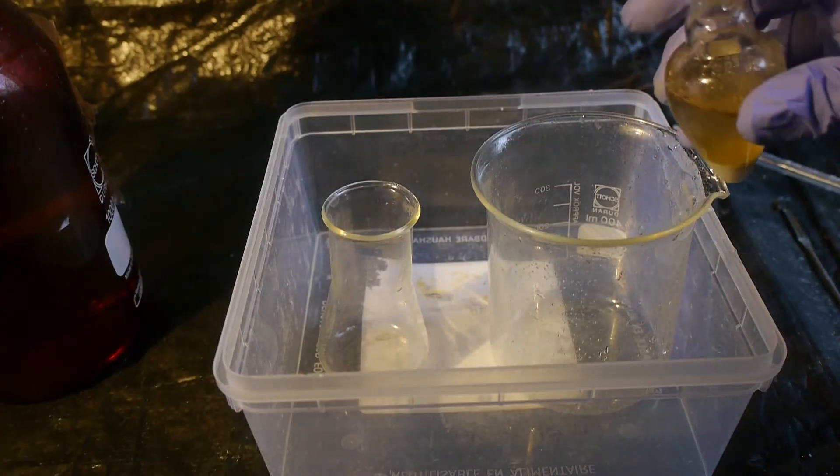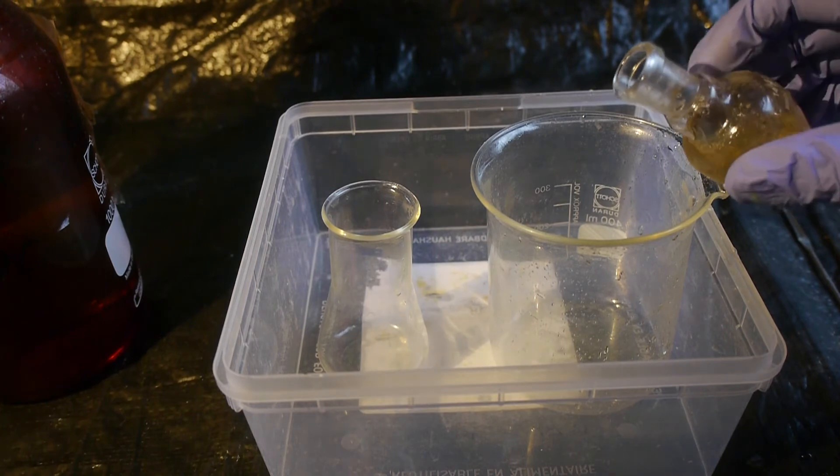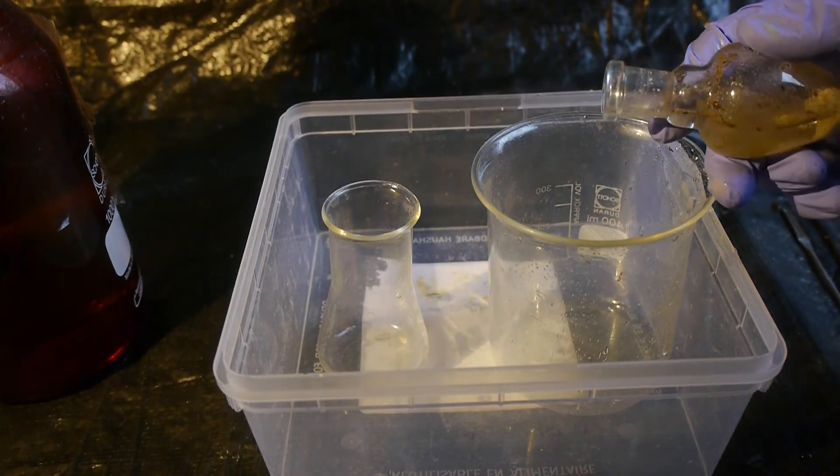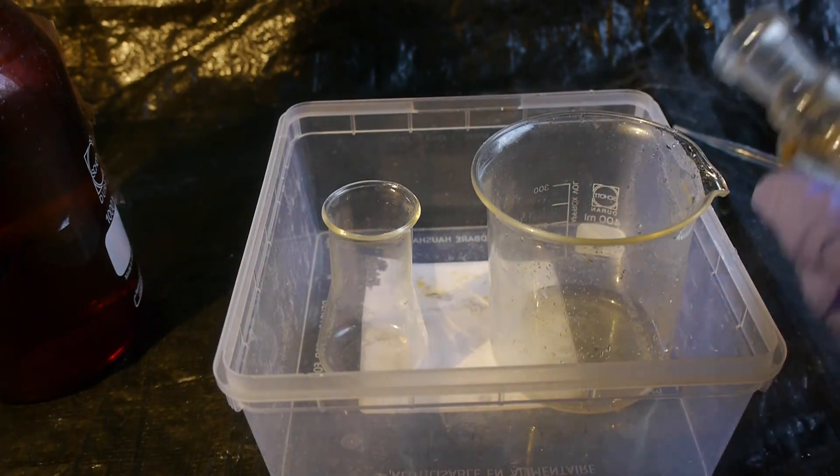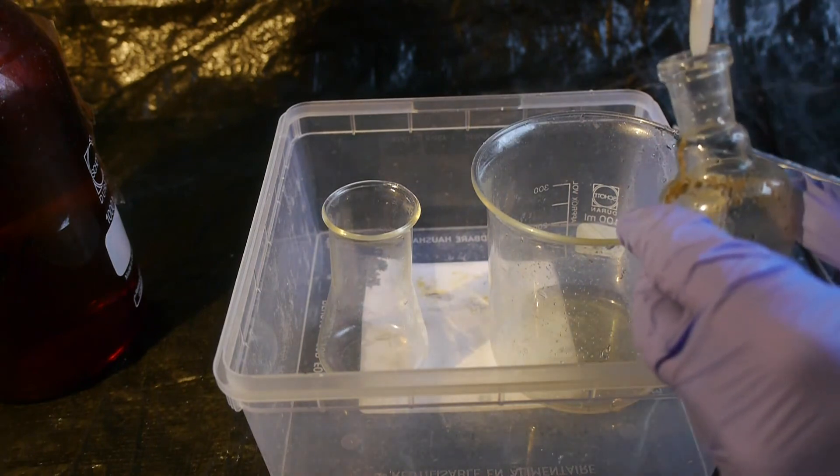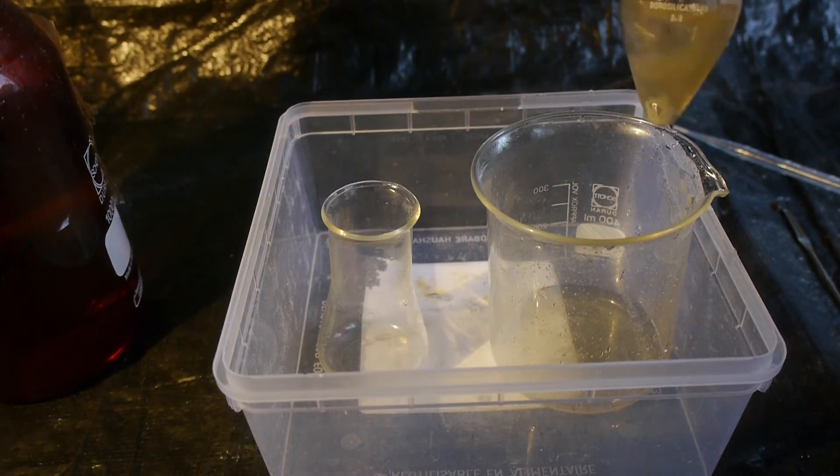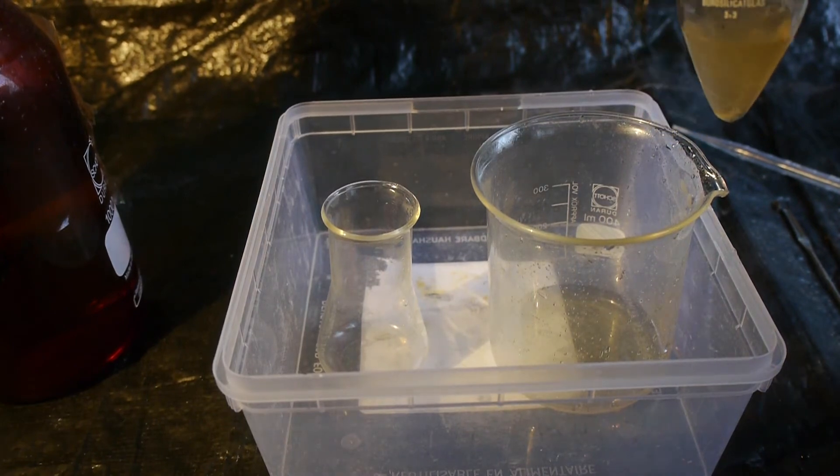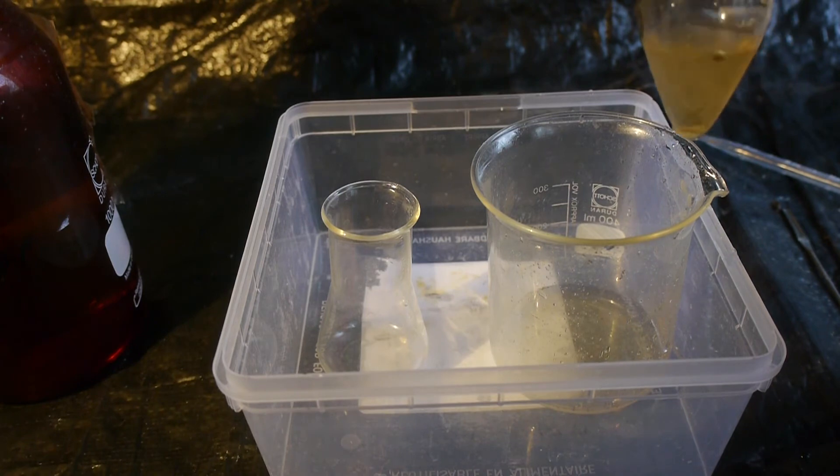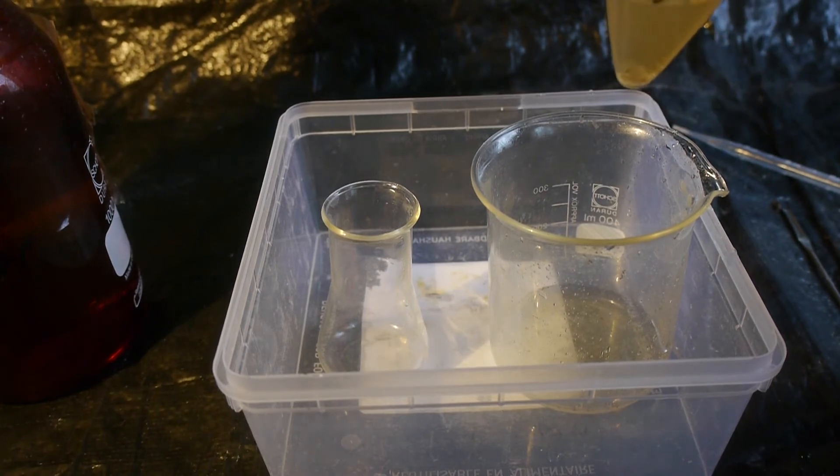And now let's decant off the excess liquid from the gold dust. Or more likely sand. And now I'll have to rinse this like three times with distilled water. Wait. Now most of that stuff seems to have dissolved. Now that's interesting. Maybe that was just precipitated mercury nitrate. Which precipitates when you dilute it.